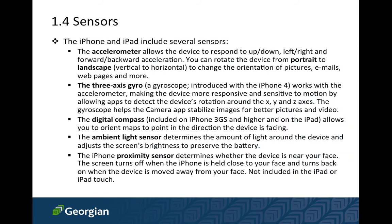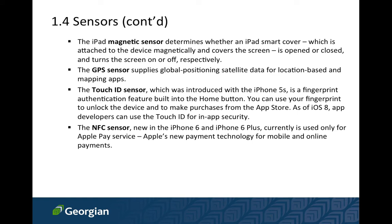These sensors are neat. We have the accelerometer, which has been there a long time. The three-axis gyro has been there since iPhone 4 and is more sensitive to motion by figuring out rotation. There's a compass that came in from iPhone 3. Some Android devices have temperature sensors too, which iPhones don't have. There's an ambient light sensor to change screen brightness, proximity sensors so when you put it to your ear it reacts, a magnetic sensor for the iPad cover, and GPS of course.